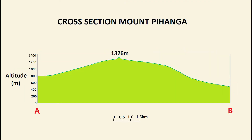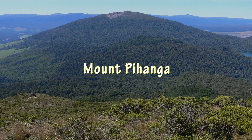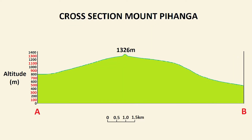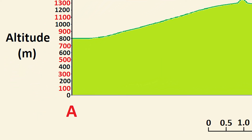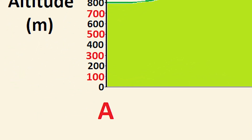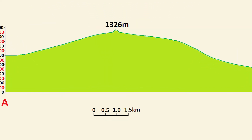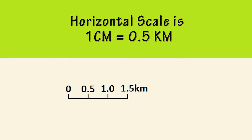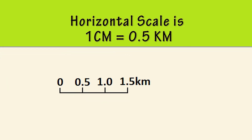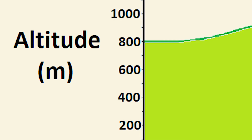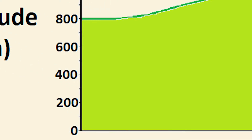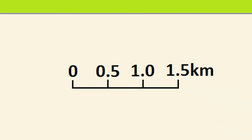The example I'm going to use is this cross-section graph of Mt. Pihanga, a volcano located in the central North Island of New Zealand. In the case of the cross-section of Mt. Pihanga, the vertical scale is 1cm equals 100m. The horizontal scale is 1cm equals 0.5km. Note that the vertical scale was using meters, while the horizontal scale was using kilometers.